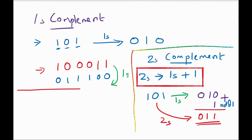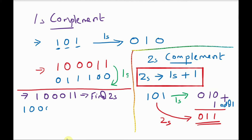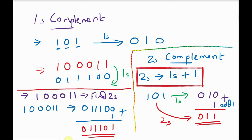We will see another example — finding the 2's complement of 1, 0, 0, 0, 1, 1. First find the 1's complement: replace 1 with 0 and 0 with 1, giving 0, 1, 1, 1, 0, 0. Then to find the 2's complement, add 1 to the result. We will get 0, 1, 1, 1, 0, 1. So this is the final answer.